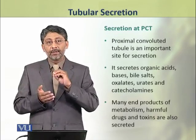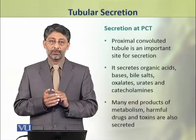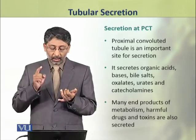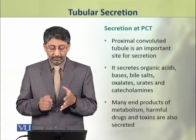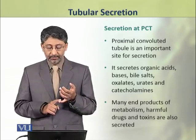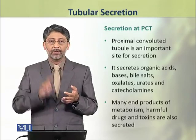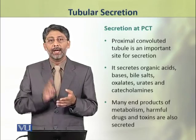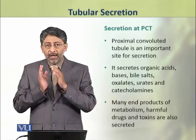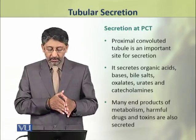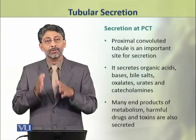First, we shall discuss the secretion at the proximal convoluted tubule, which is an important site for secretion. It secretes organic acids, bases, bile salts, oxalates, urates, and catecholamines. Besides this, many end products of metabolism, harmful drugs, and toxins are also secreted.